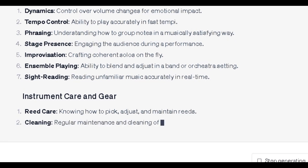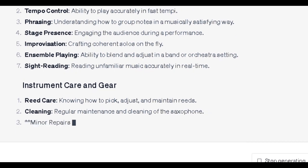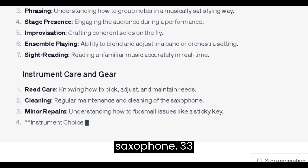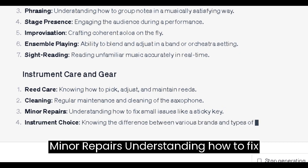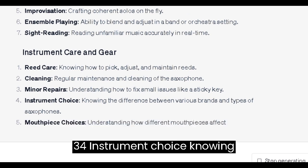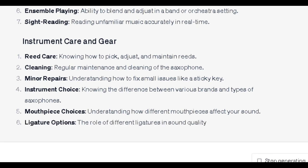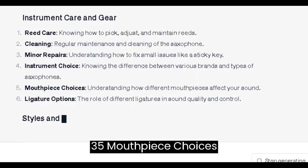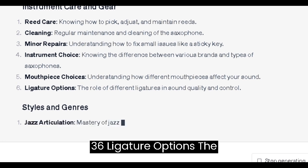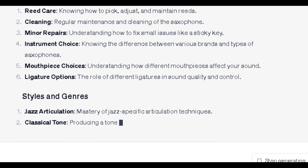Instrument Care and Gear. 31. Reed Care: knowing how to pick, adjust, and maintain reeds. 32. Cleaning: regular maintenance and cleaning of the saxophone. 33. Minor Repairs: understanding how to fix small issues like a sticky key. 34. Instrument Choice: knowing the difference between various brands and types of saxophones. 35. Mouthpiece Choices: understanding how different mouthpieces affect your sound. 36. Ligature Options: the role of different ligatures in sound quality and control.